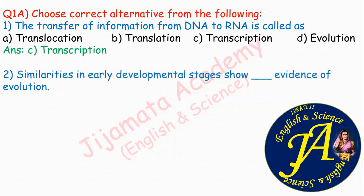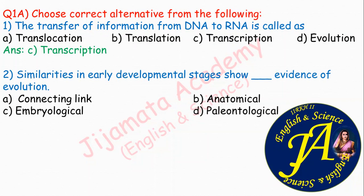Next question: similarities in early developmental stages show dash evidence of evolution. Options are connecting link, anatomical evidences, embryological evidences, paleontological evidences. Early developmental stages means embryonic stages, so the evidence is embryological evidence of evolution. Correct answer is option C: embryological.